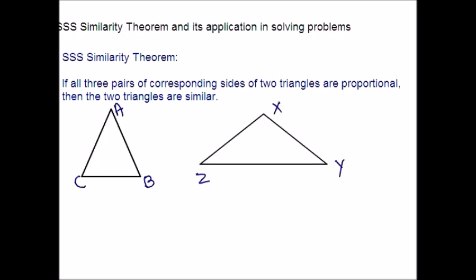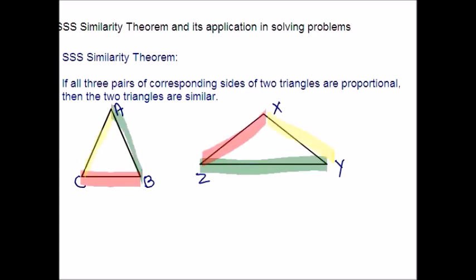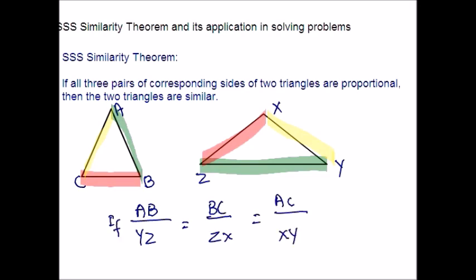Consider these two triangles ABC and XYZ. Let me write the proportions of the sides on the board. I'll use the same colors for the sides — shortest, second shortest, and the longest — so it will be easy for you to identify. AB is corresponding to YZ, BC and ZX, AC and XY. If these proportions are true, then triangles ABC and XYZ are similar.